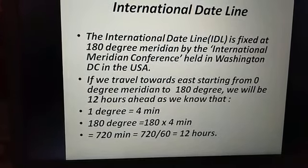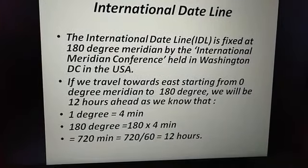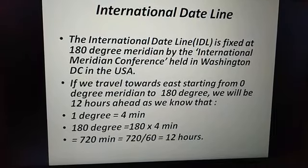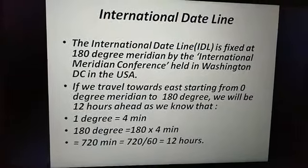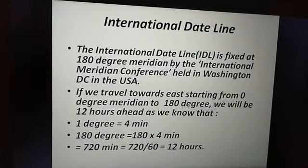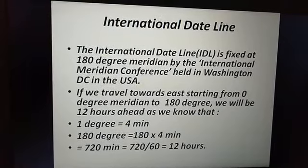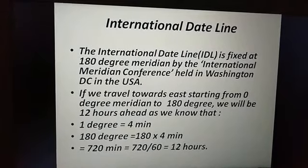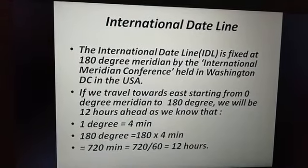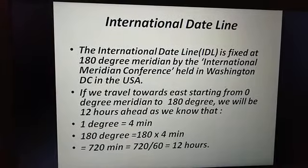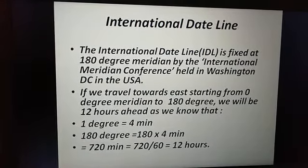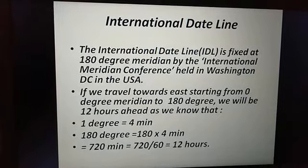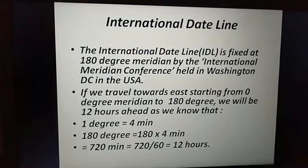If we start from 0 degrees, the prime meridian, and move east towards the 180 degree meridian, we will find that we are 12 hours ahead. For example, if it is 12 noon at the prime meridian, then at 180 degrees it will be 12 AM — midnight. So at 180 degrees we will always be 12 hours ahead of the 0 degree meridian.